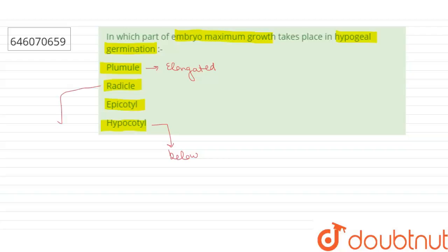The epicotyl is the part of the stem which is above the cotyledons. During the germination process, the epicotyl, being the active region, elongates and pushes the plumule above the ground while the cotyledons remain underground.